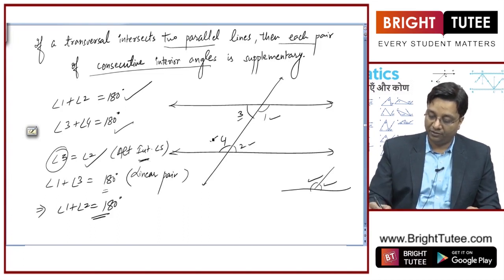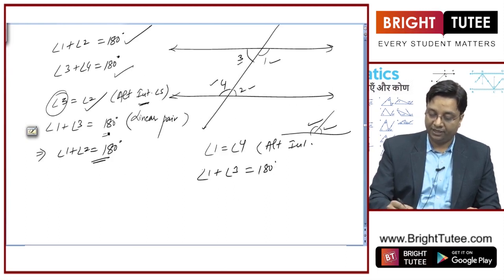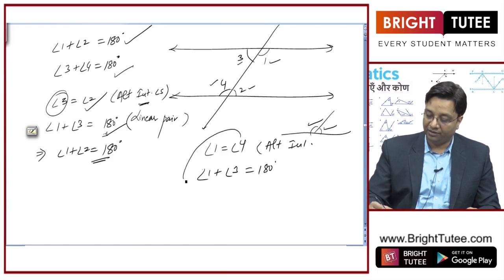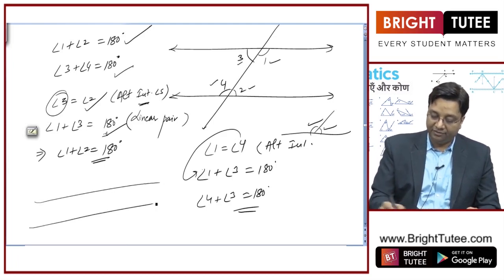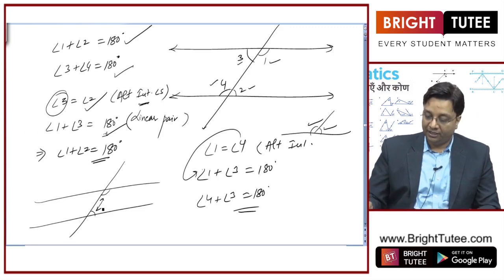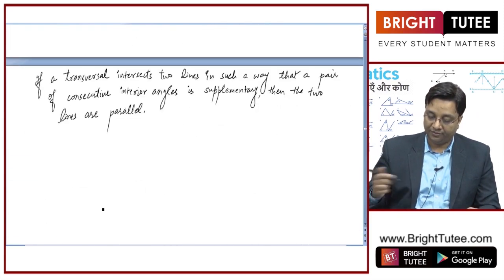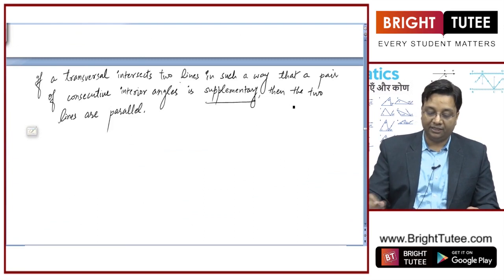Similarly, angle 1 equals angle 4 by alternate interior angles, and angle 1 plus angle 3 is 180 degrees as a linear pair. Replacing angle 1 by angle 4, we get angle 4 plus angle 3 equals 180 degrees. So if these are two parallel lines cut by a transversal, the co-interior angles are supplementary. Conversely, if consecutive interior angles are supplementary, then the two lines are parallel.